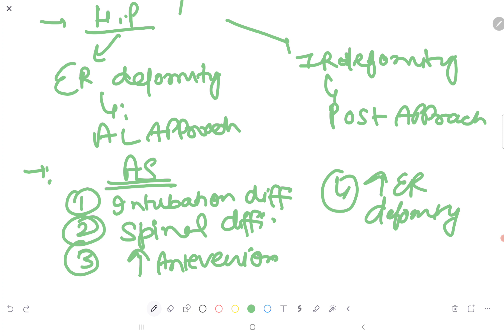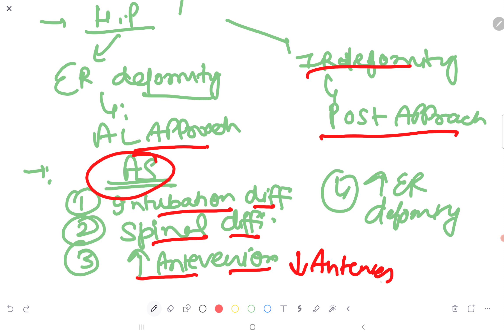In the hip, if there is external rotation deformity present, then you can use the anterior lateral approach. If internal rotation deformity is present, then posterior approach is used. In the ankylosing spondylitis, intubation is difficult, spinal anesthesia is difficult and there is already increased anteversion. So if you keep more anteversion, then there will be more chances of dislocation. So in these patients of ankylosing spondylitis, decrease anteversion because there is already increased anteversion and there is an external rotation deformity. So use the anterior lateral approach.